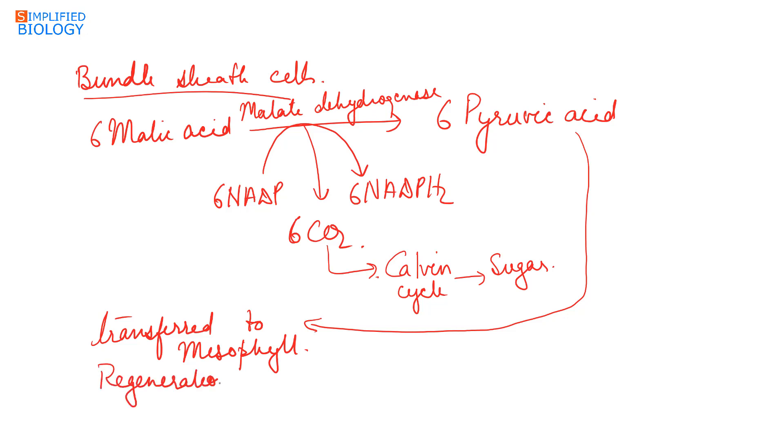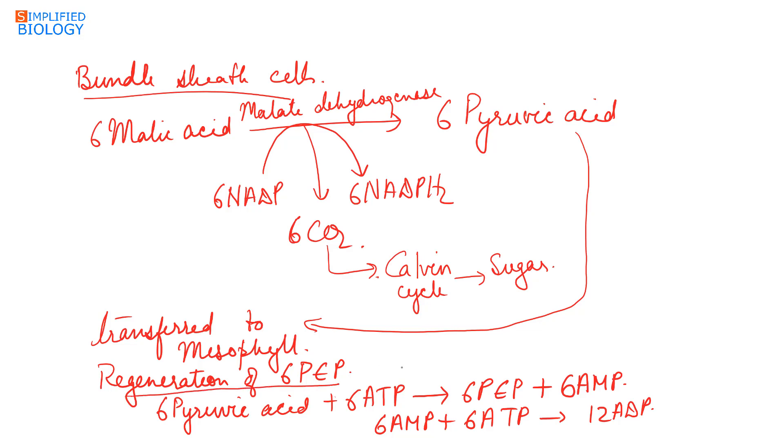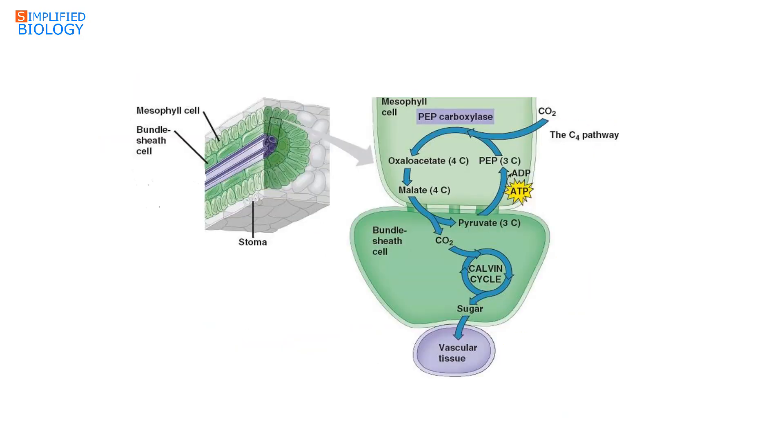The last step is regeneration of six molecules of phosphoenol pyruvate. Pyruvic acid reacts with ATP to form phosphoenol pyruvate, but in this process ATP instead of being converted into ADP changes into AMP. To convert the AMP into ATP, another six molecules of ATP get utilized. So during the regeneration of phosphoenol pyruvate, 12 molecules of ATP are used.